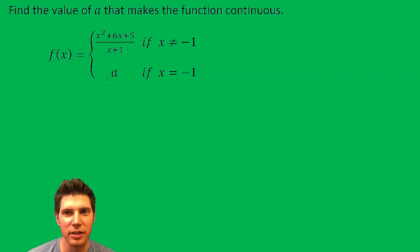We just want to find the value of a that makes the function continuous. So basically whatever the value of this function is at negative one, we just want the a to equal that. So first let's plug negative one in here and see what we get.